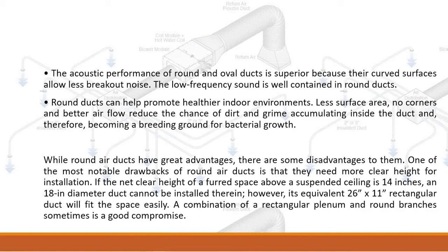While round air ducts have great advantages, there are some disadvantages. One of the most notable drawbacks is that they need more clear height for installation. If the net clear height above a suspended ceiling is 14 inches, an 18-inch diameter duct cannot be installed therein; however, its equivalent 26x11 rectangular duct will fit easily. A combination of a rectangular plenum and round branches is sometimes a good compromise.